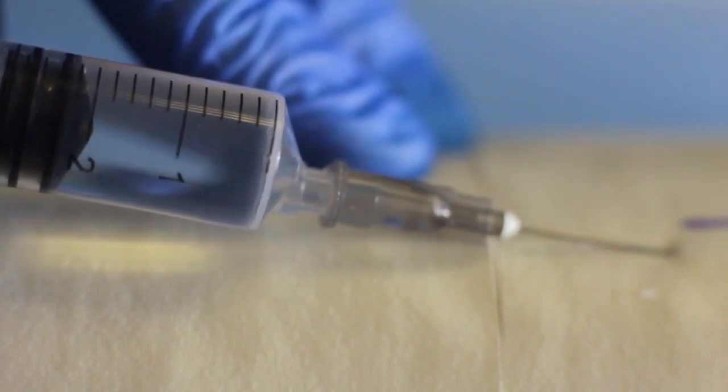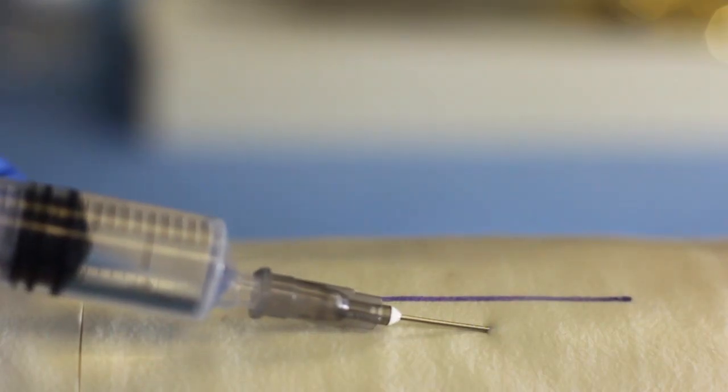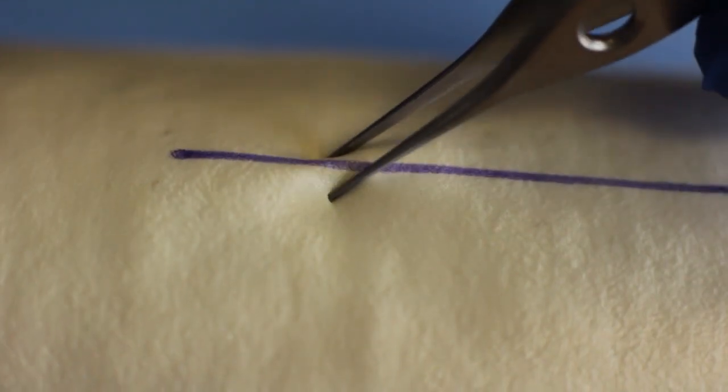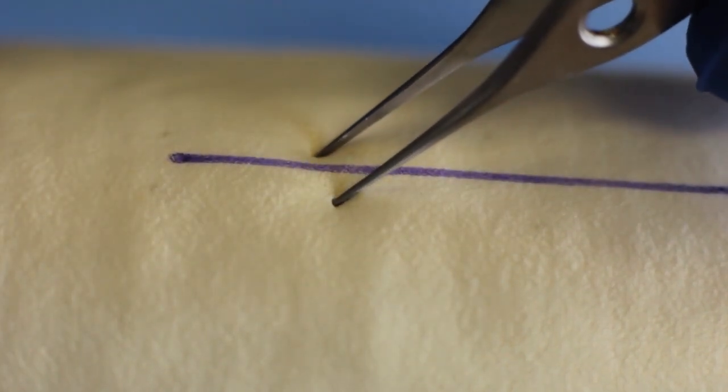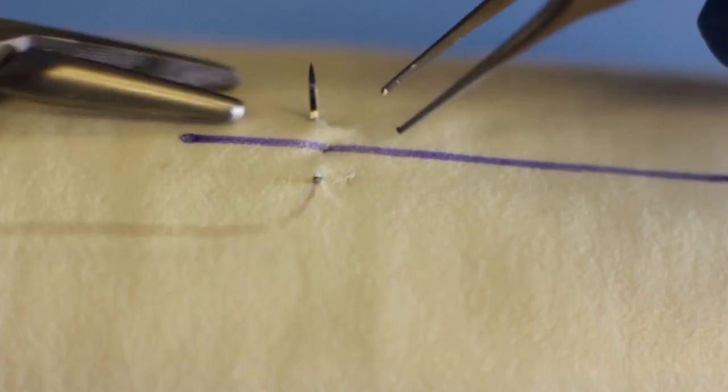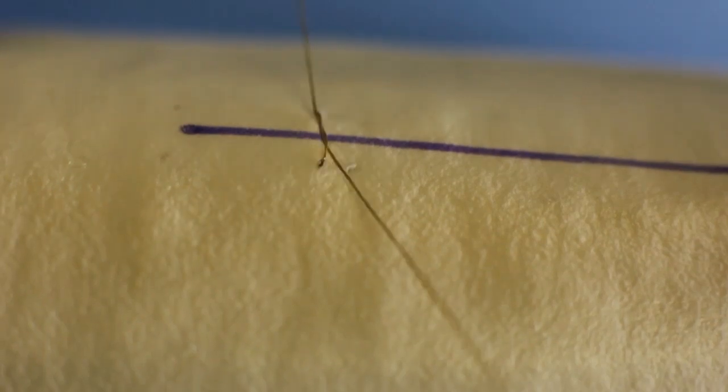Repeat the same procedure on the other side of the laceration. Wait two to three minutes. Test the effectiveness of the local anesthetic by poking the wound area with a sharp probe or by pinching it with a forceps. You are now ready to prepare the wound for suturing.